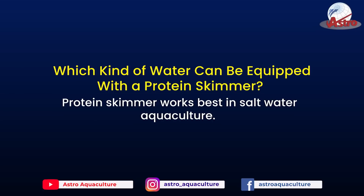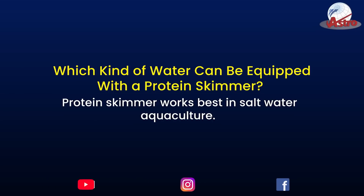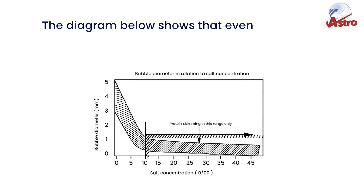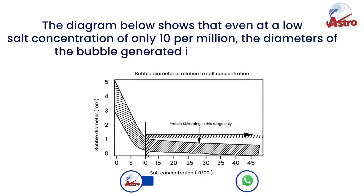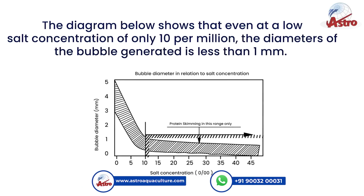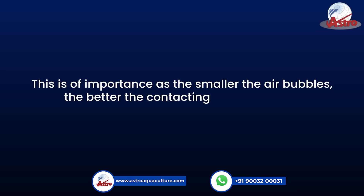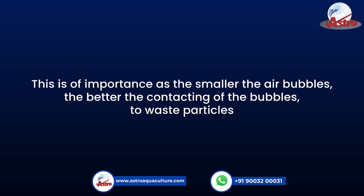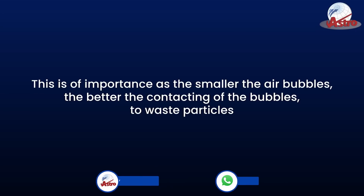Protein skimmers work best in saltwater aquaculture. The diagram below shows that even at a low salt concentration of only 10 parts per million, the diameter of the bubbles generated is less than one millimeter. This is of importance as the smaller the air bubbles, the better the contacting of the bubbles to waste particles.